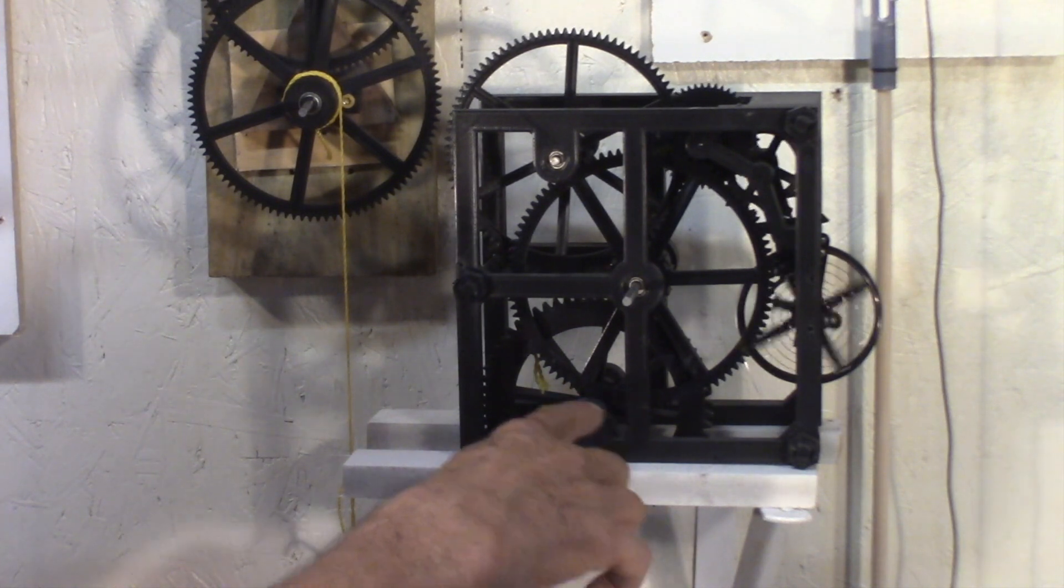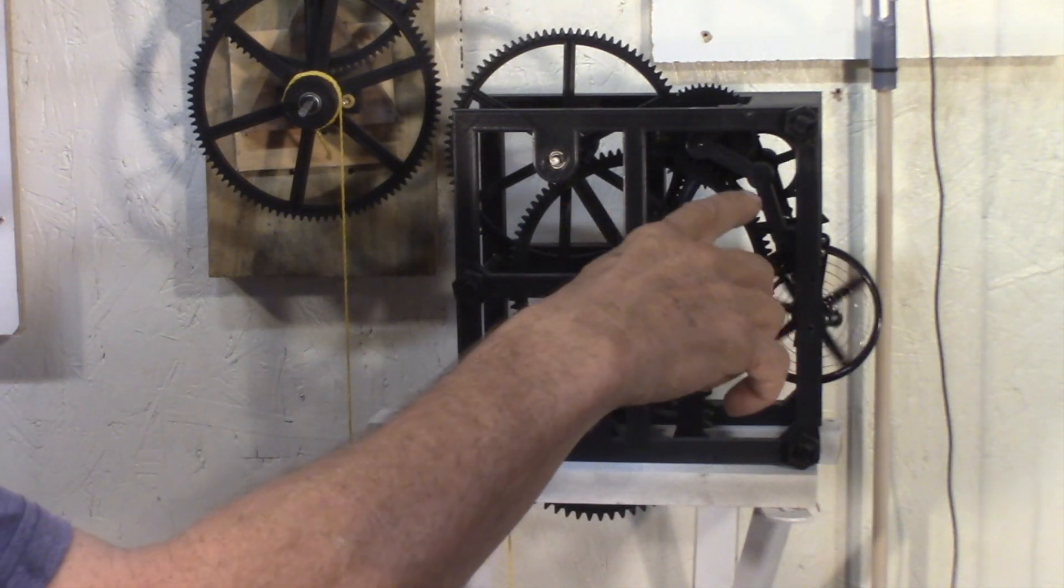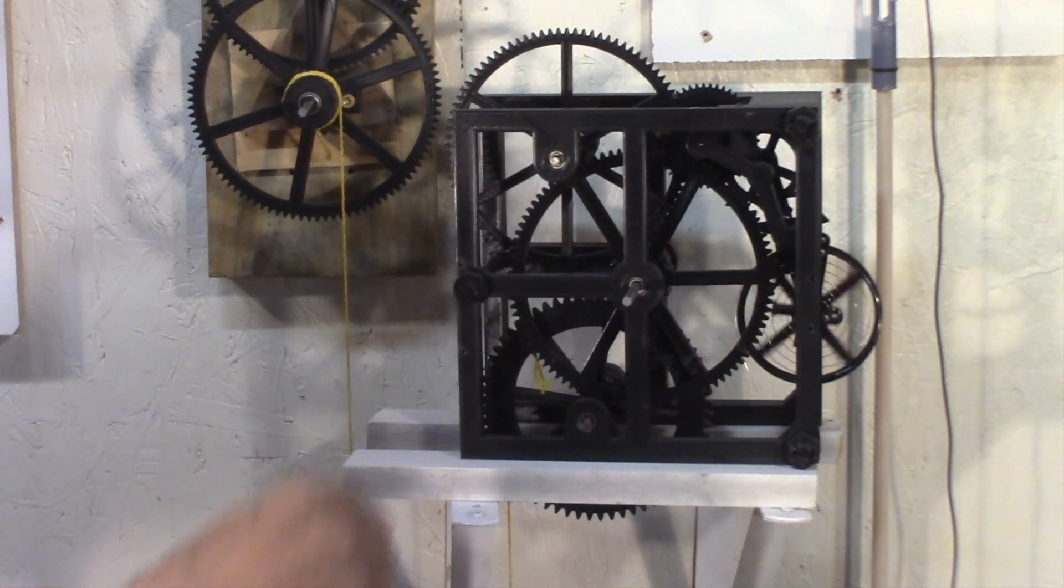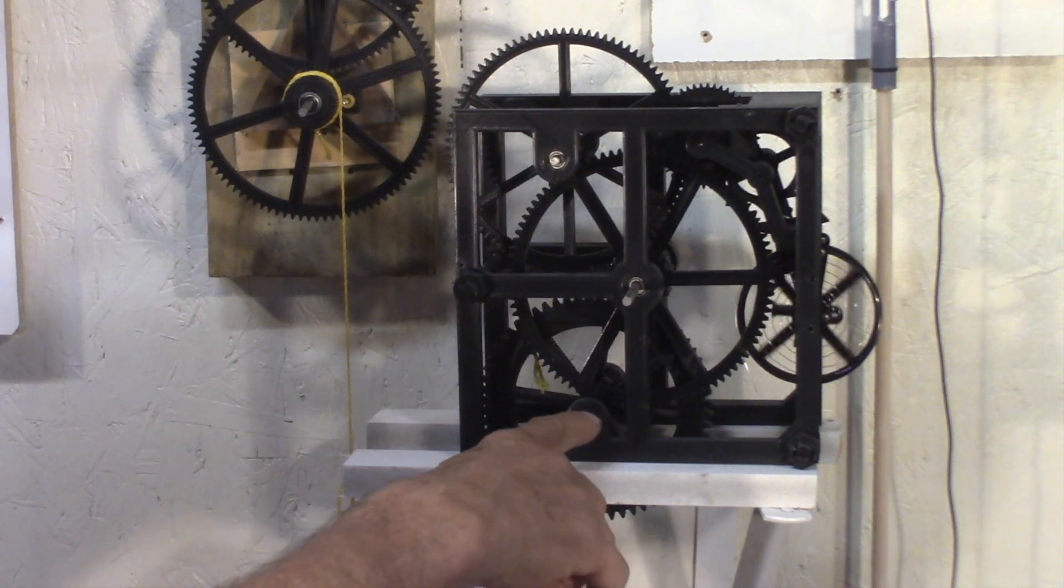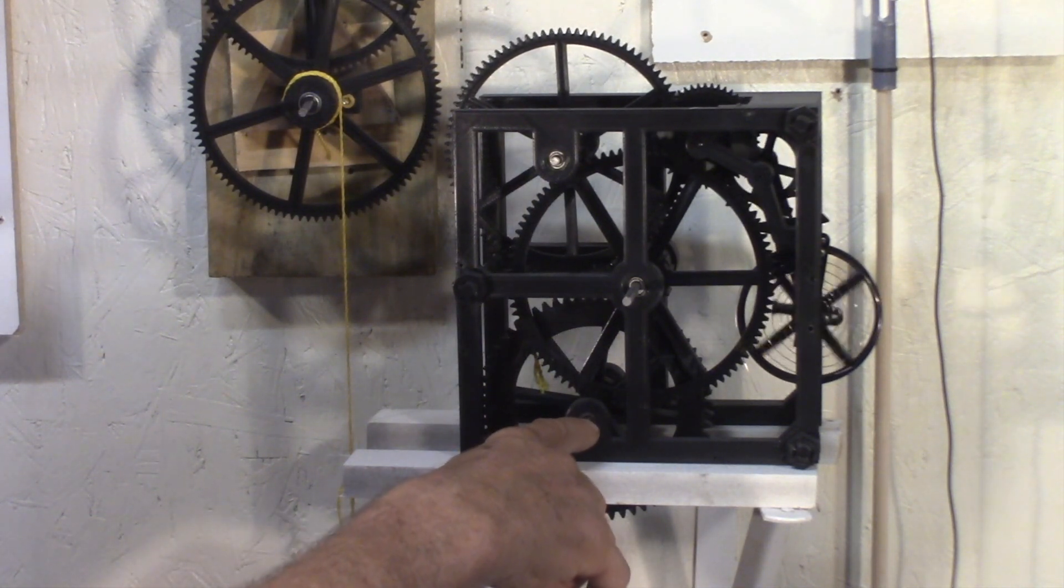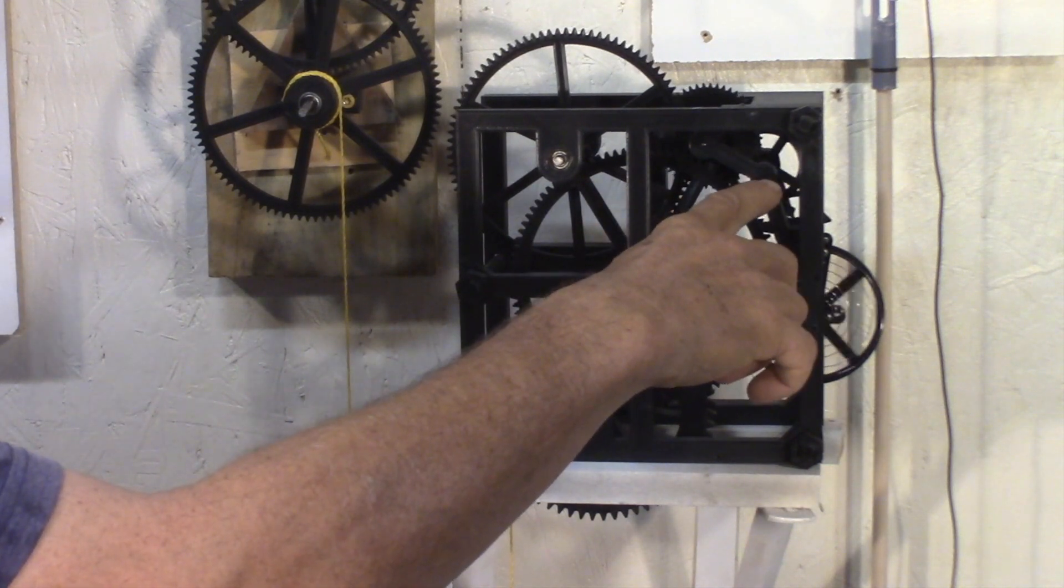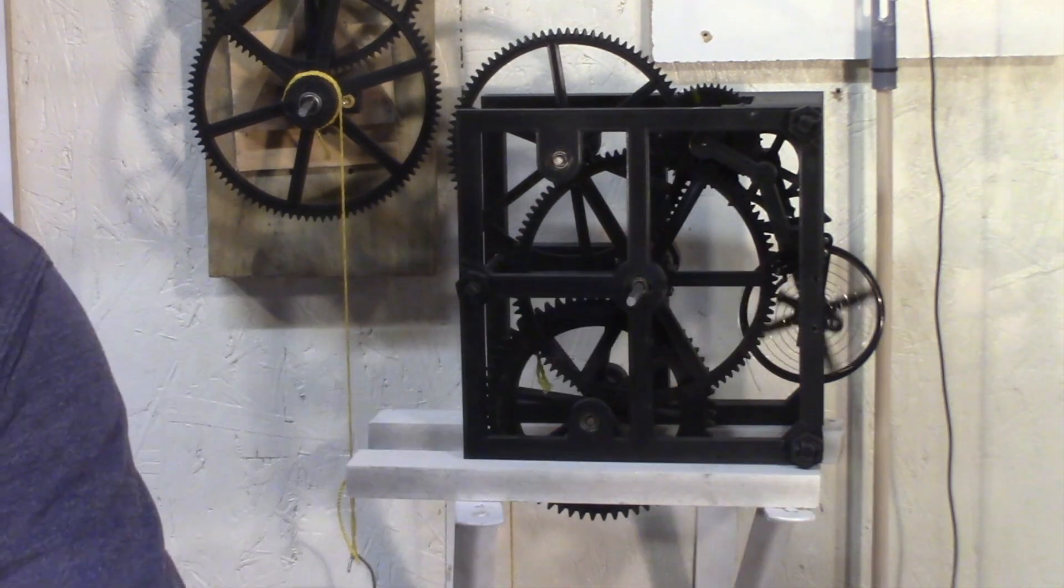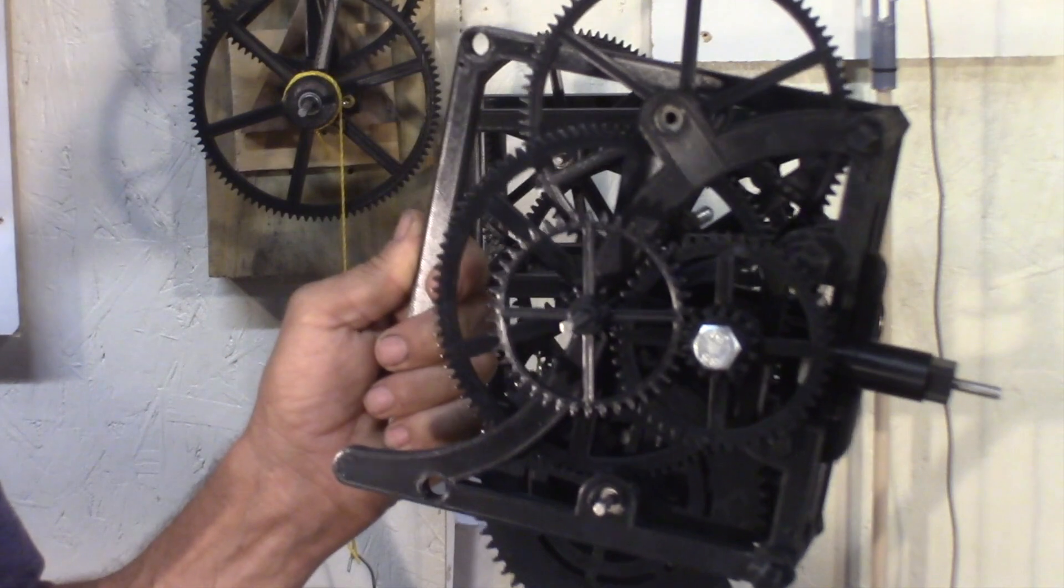And that gives me a ratio of 1 to 960. So basically I need 1000 ton more torque at the drone than I need to the escape wheel. That's a lot.